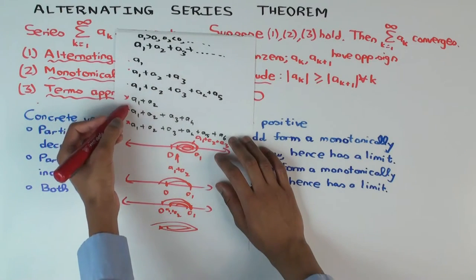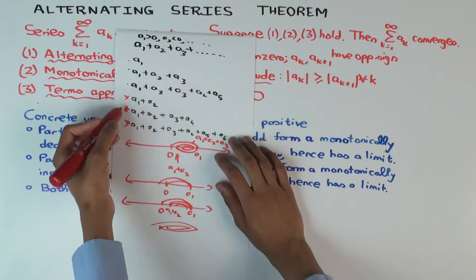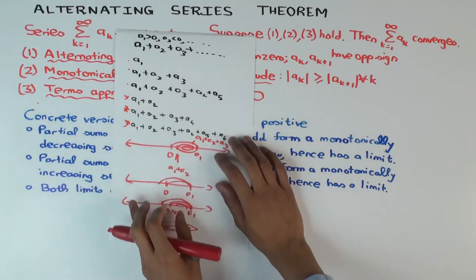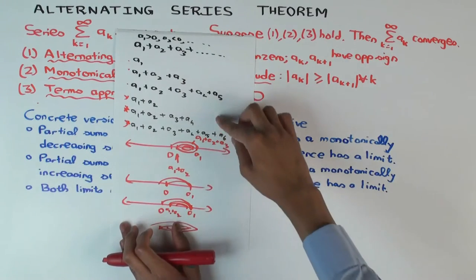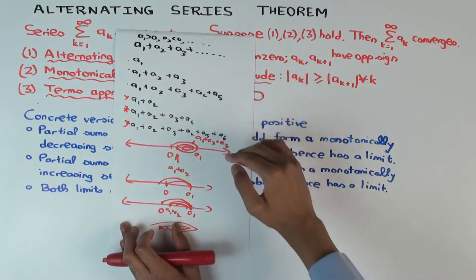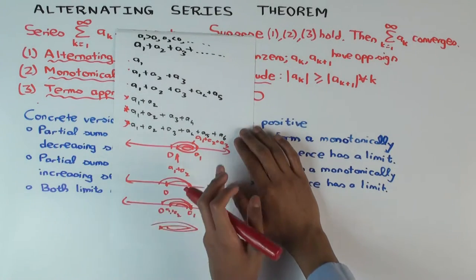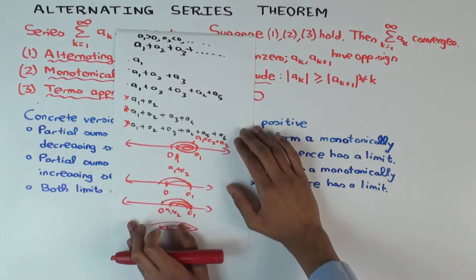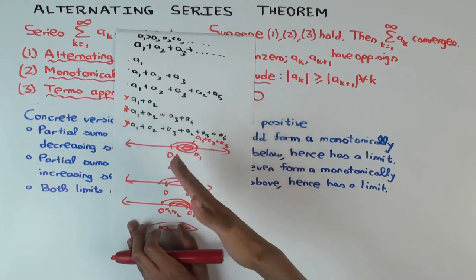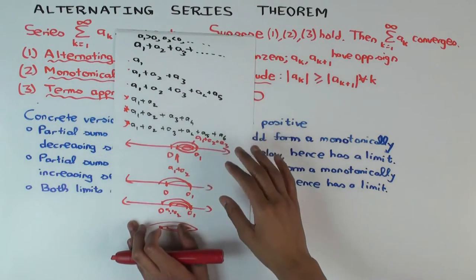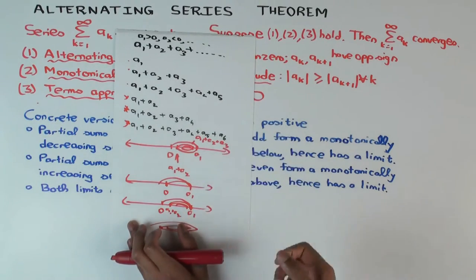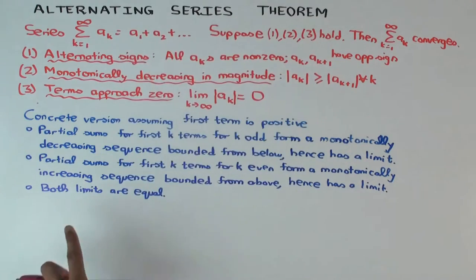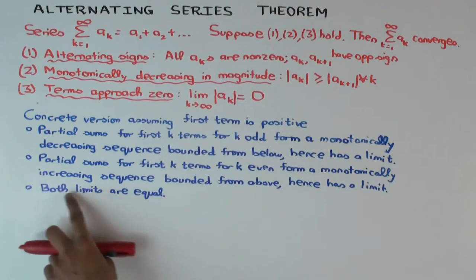The even partial sums are monotonically increasing, bounded from above by all the odd ones, and so they also have a limit. The even number ones are going up, the odd number ones are going down, and both have limits because they're bounded by each other. So what's the final thing we want to show? Both limits are equal.